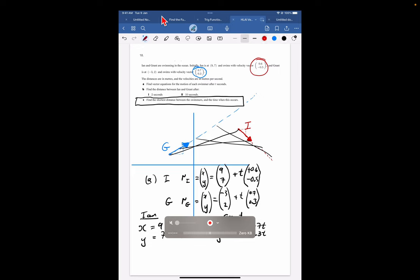Here's Ian. We'll put Ian here. And the x-coordinate equals 9 plus 0.6t. And the y-coordinate equals 7 minus 0.5t. That's Ian. And over here is Grant. And Grant x equals negative 3 plus 0.7t. And y equals 2 plus 0.3t. So that's great.